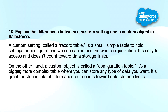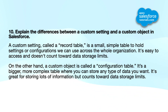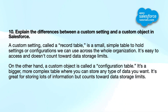Tenth question: explain the difference between a custom setting and a custom object in Salesforce. A custom setting is a small, simple table used to hold settings or configuration data accessible across the whole organization. It's easy to access and doesn't count towards data storage limits. A custom object, on the other hand, is a larger, more complex table where you can store any type of data. It's great for storing lots of information but does count towards data storage limits.